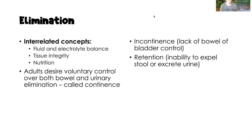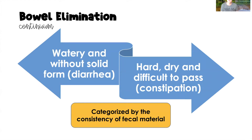There are three interrelated concepts for elimination: fluid and electrolyte balance, tissue integrity, and nutrition. We have discussed all of those previously in core concepts videos — links will be in the description box below. As adults, we desire voluntary control over both bowel and urinary elimination, which is called continence. However, some adults experience incontinence — for bowel, bladder, or both. We also have to talk about retention: the inability to excrete either stool or urine.